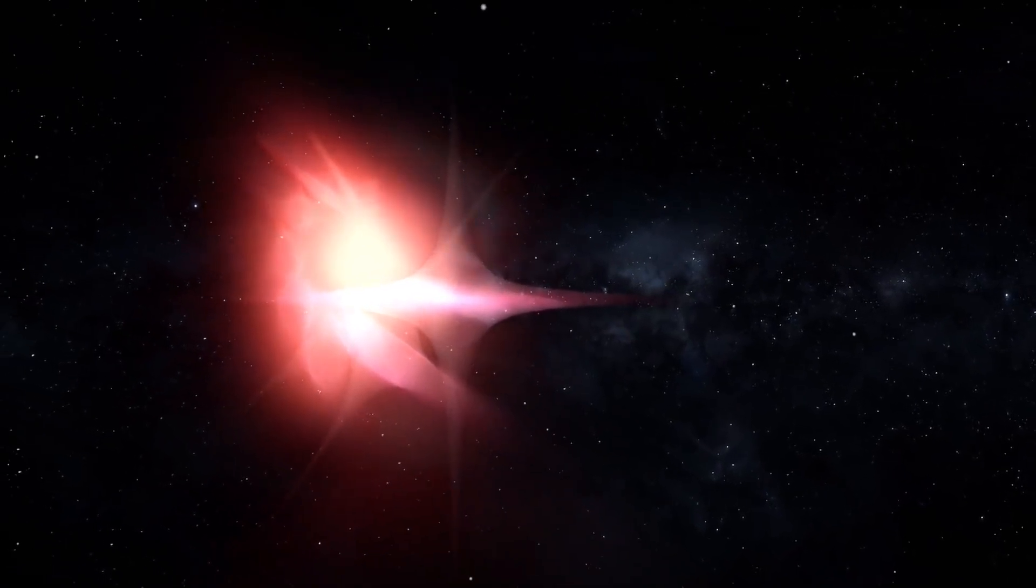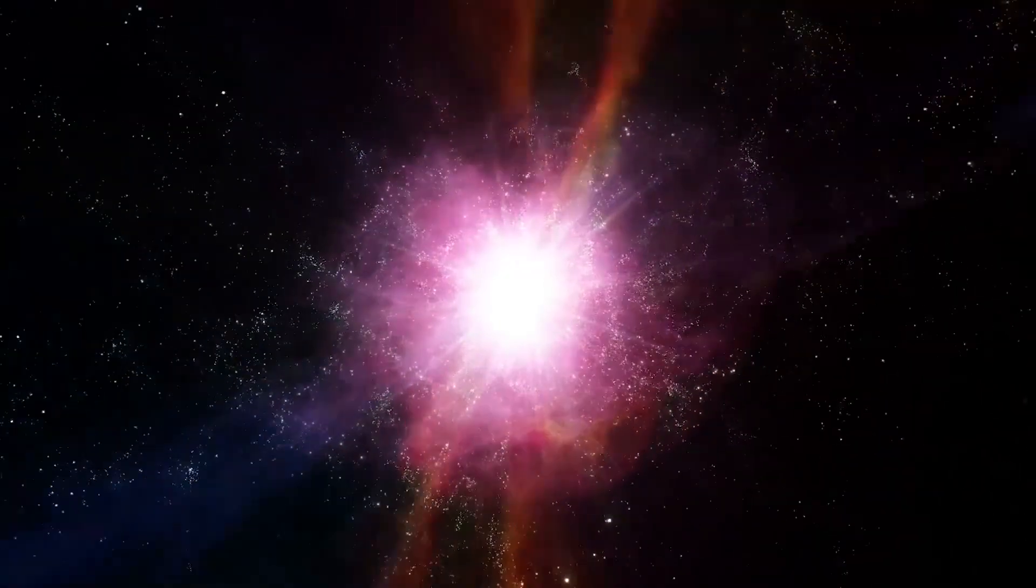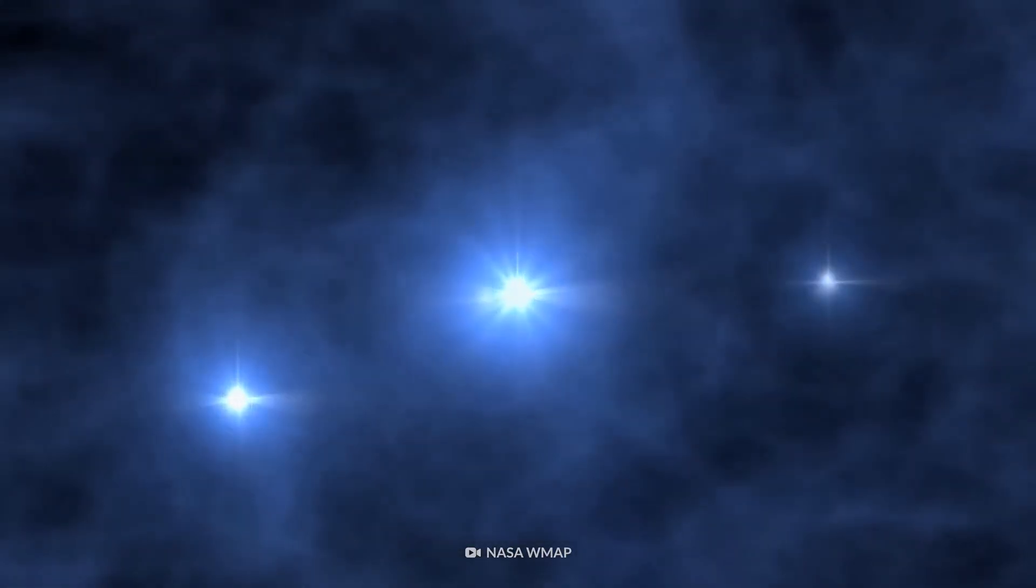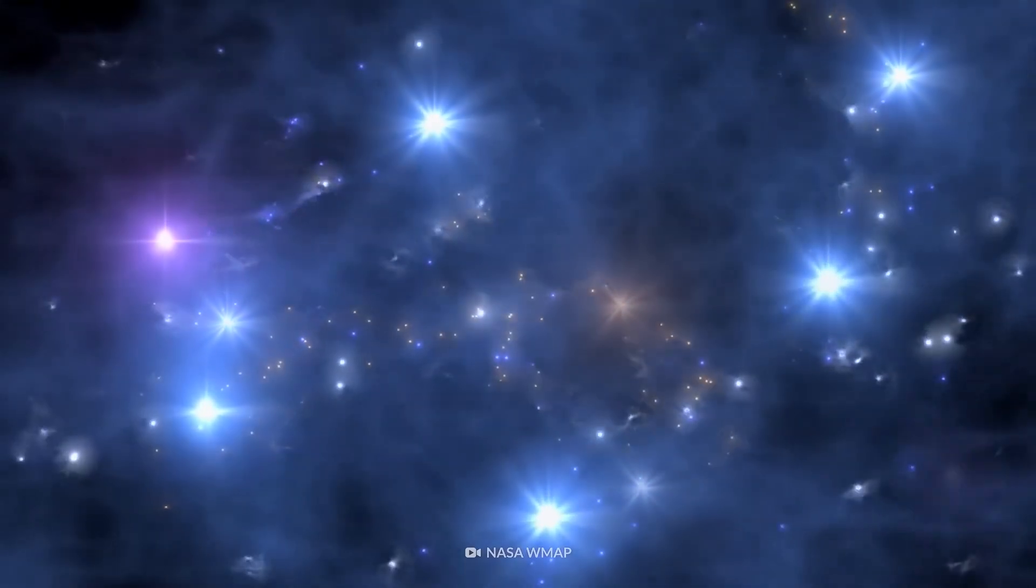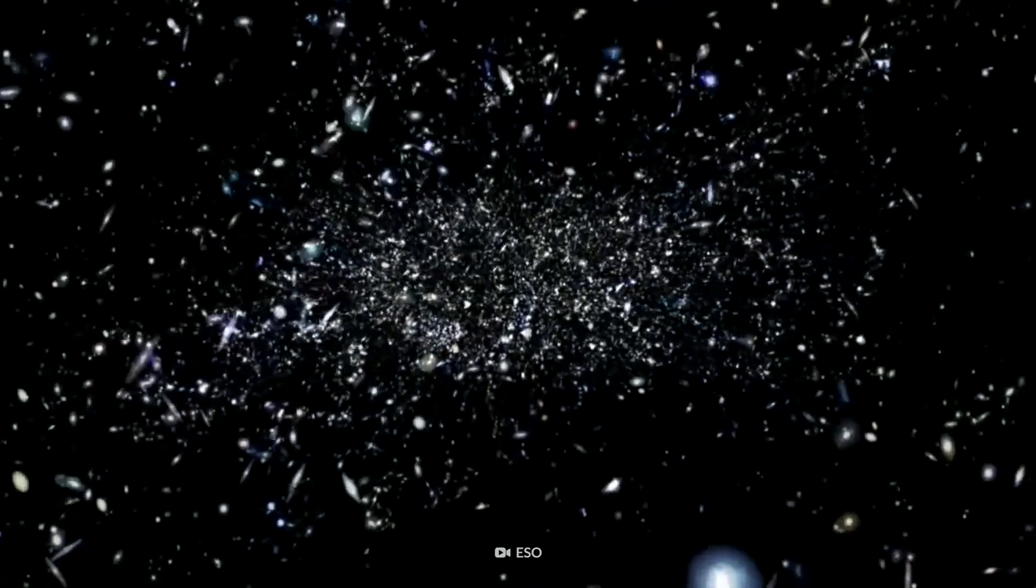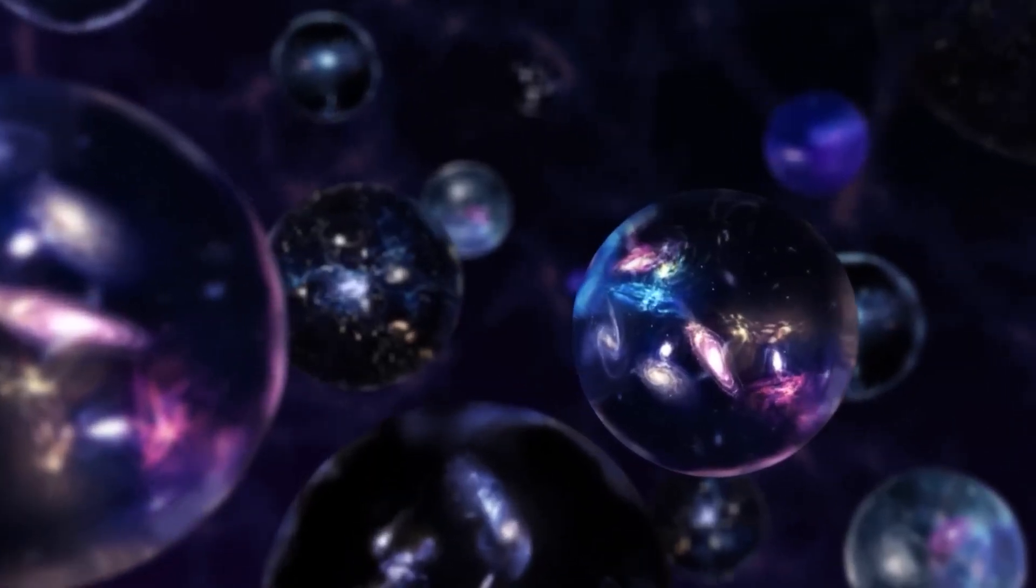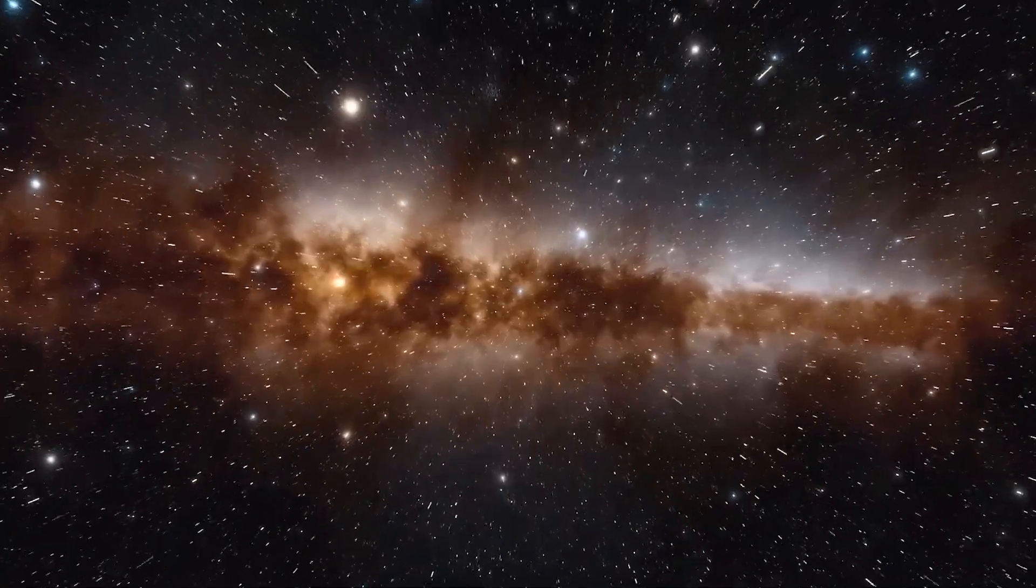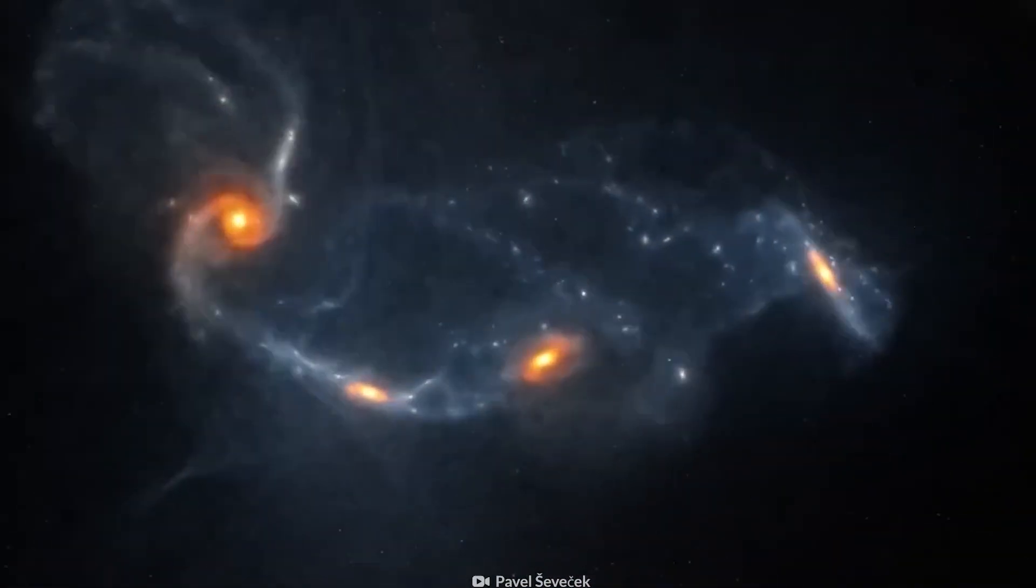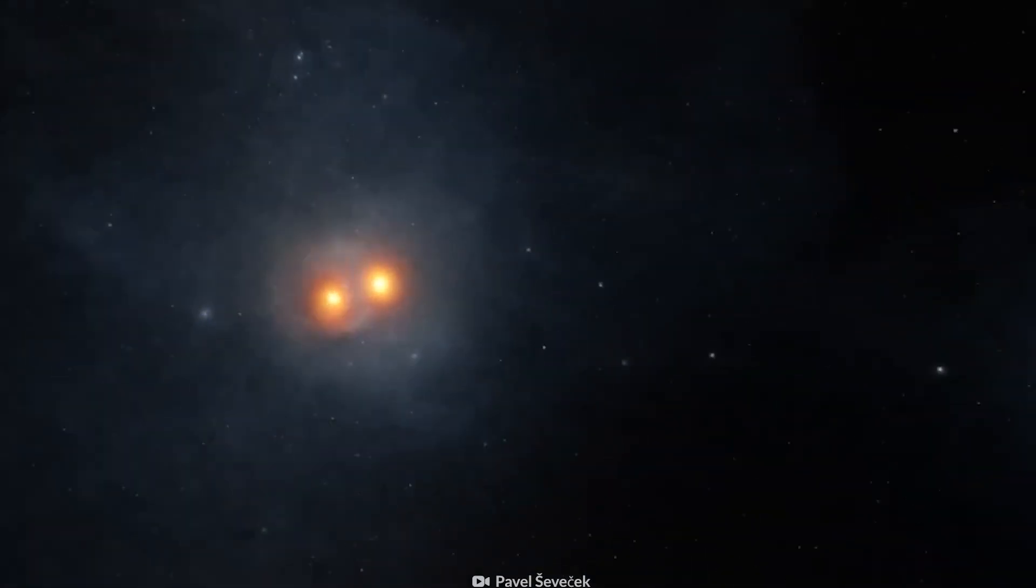Gamma-ray bursts are some of the most energetic and mysterious events in the universe. They are brief, intense bursts of gamma-ray radiation that last for only a few milliseconds to several minutes. Among the numerous GRBs observed, GRB 080319b stands out as one of the most remarkable events in the history of astronomy. In this video, we will delve into the details of GRB 080319b, exploring its discovery, characteristics.